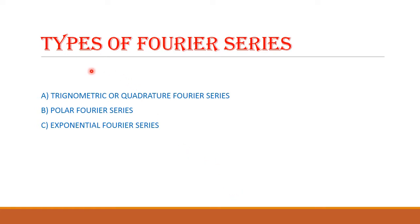Next, we are going to see the types of Fourier series. There are three types: one is trigonometric or quadrature Fourier series, the second is polar Fourier series, and the third is exponential Fourier series.